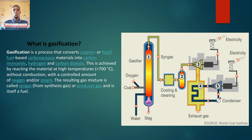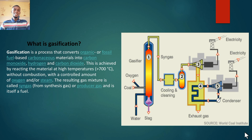Without combustion means without burning — with a controlled amount of oxygen or steam. You have the carbonaceous material and you pass oxygen or steam through it, and you get hydrogen, carbon monoxide, and other gases such as carbon dioxide and methane. The product you get at the end is called syngas, or synthesis gas, because it is used in the synthesis of other substances.